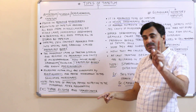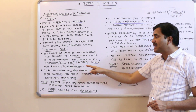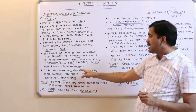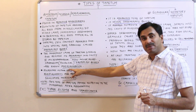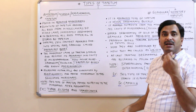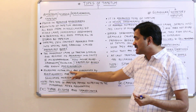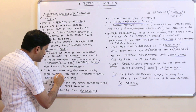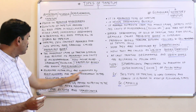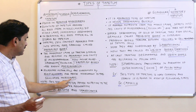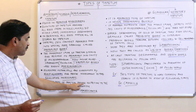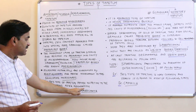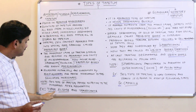Inside the microsporangium — which is also called the pollen sac — the protoplast bodies are now known as periplasmodium. The microspore mother cells present in the microsporangium are surrounded by the periplasmodium, which provides nutrition to the developing microspores. So this type of tapetum provides nutrition to the microspores after degeneration.